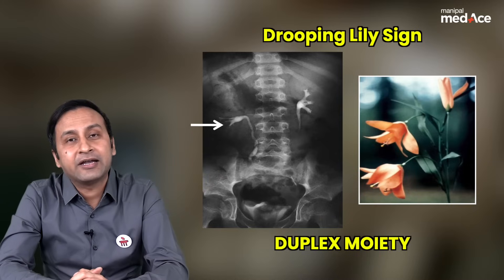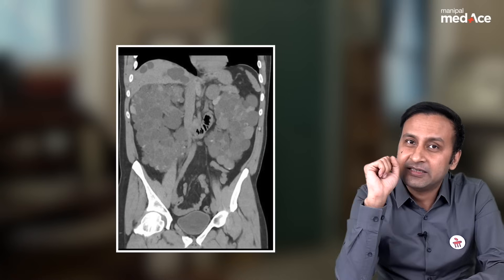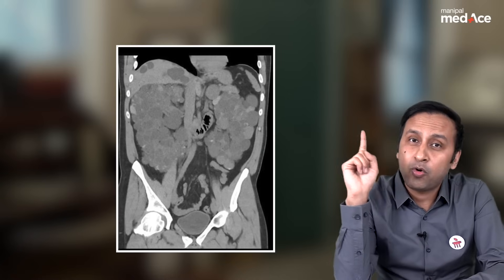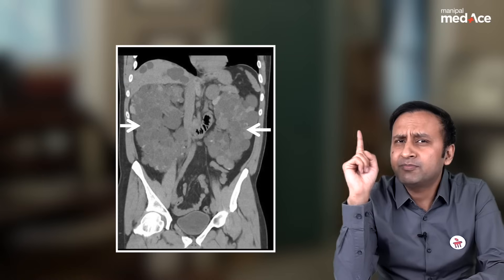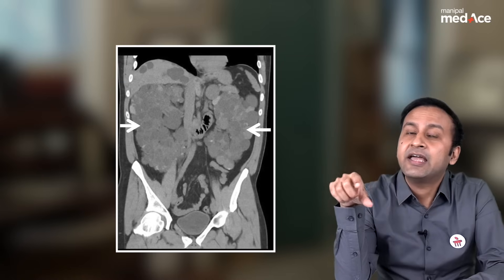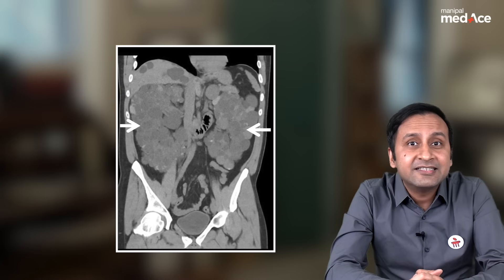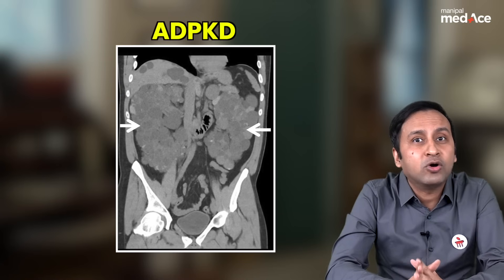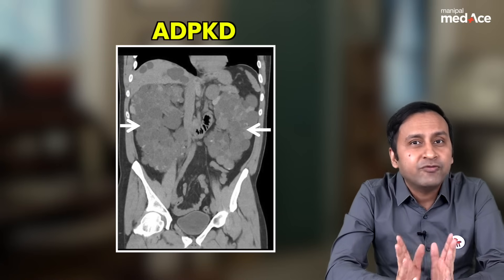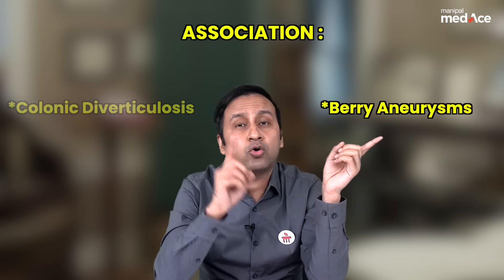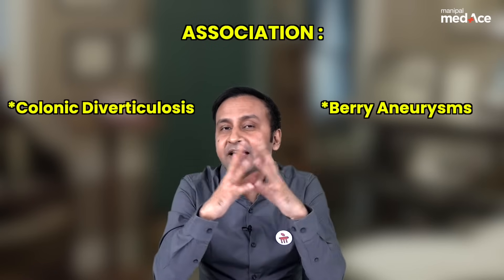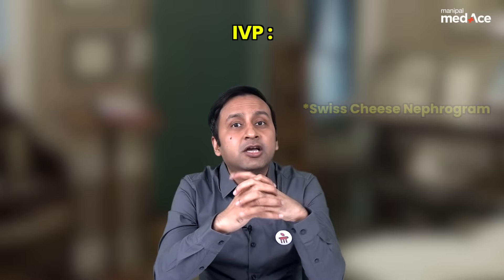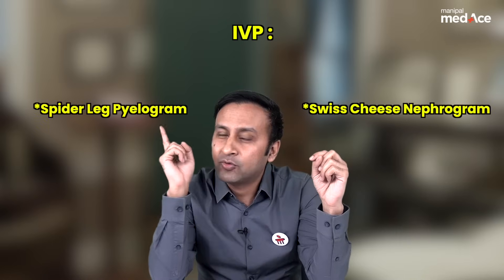On this CT image, both kidneys are enlarged and there are multiple cysts embedded within the renal parenchyma. This is a classical example of autosomal dominant polycystic kidney disease (ADPKD). ADPKD is associated with berry aneurysms and colonic diverticulosis. The important IVP signs seen with ADPKD are the Swiss cheese nephrogram and spider-like pyelogram.